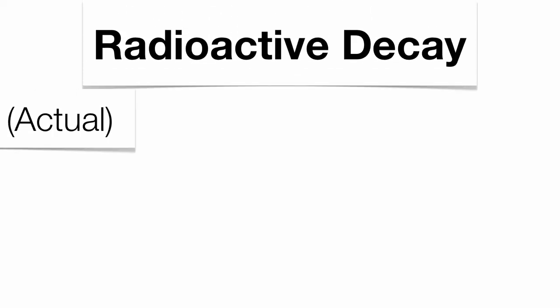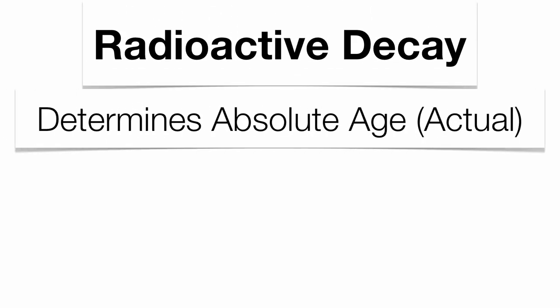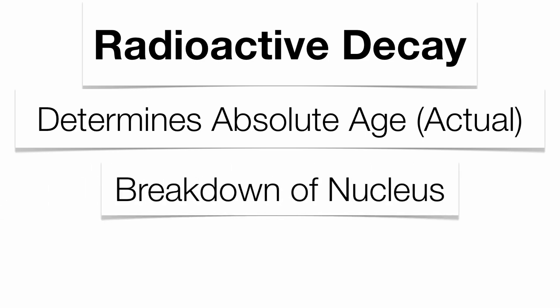Radioactive decay is a very important topic here because it actually helps us identify the actual age of a rock sample. Up to this point, we've talked about relative age, which is basically comparing the age of a rock sample to another rock sample, telling which one's younger, which one's older. This is a method that actually gives you the actual age itself, and it has to do with the breakdown of the nucleus.